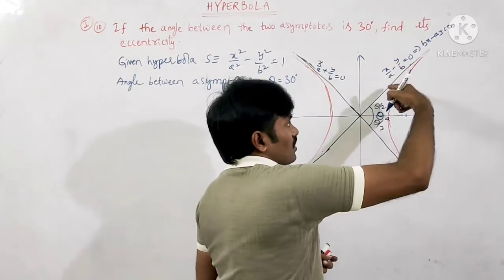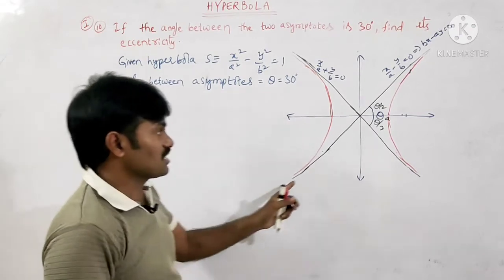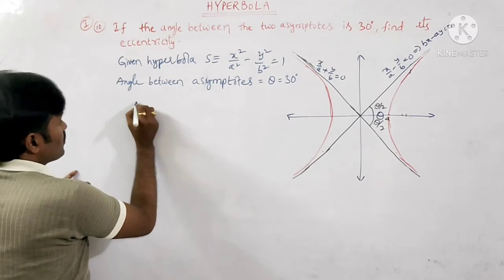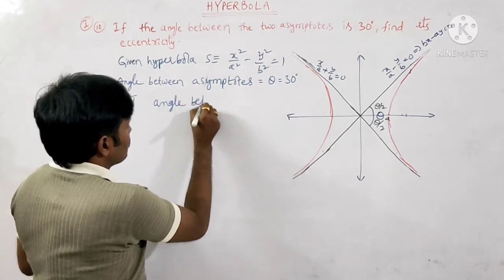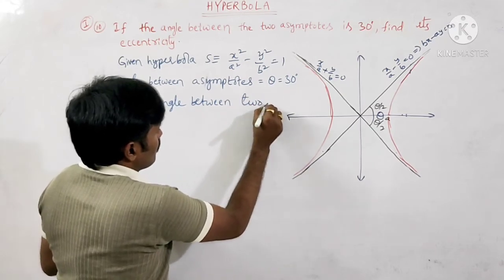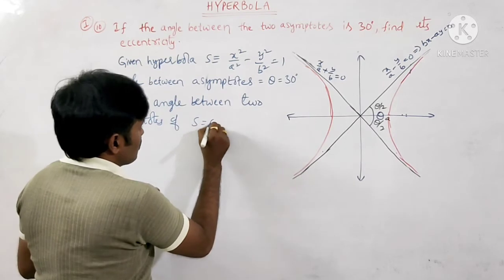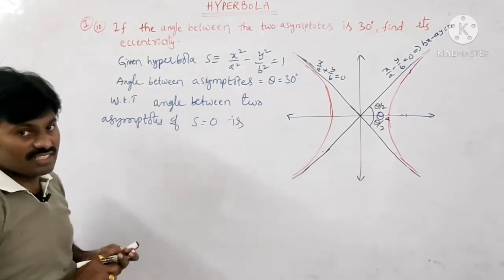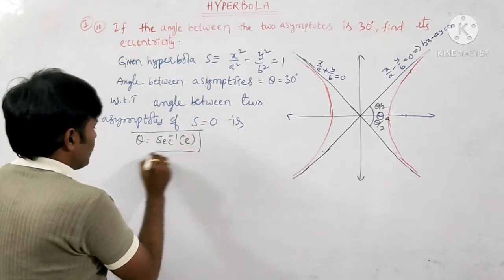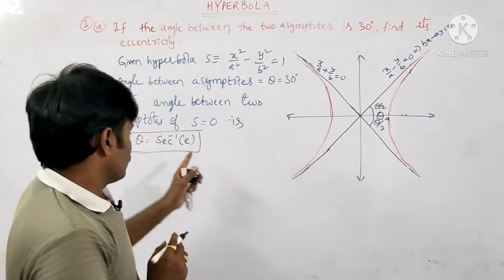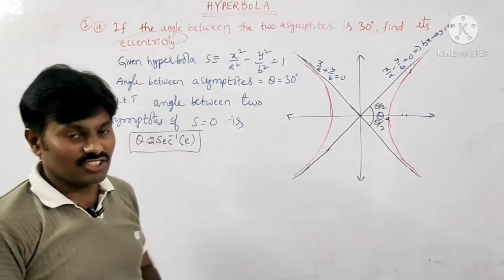Asymptotes are straight lines that never touch the hyperbola curve but limit its values. Using the formula θ = 2·sec⁻¹(e), we substitute the given angle: 30° = 2·sec⁻¹(e). Therefore sec⁻¹(e) = 15°, which gives e = sec(15°). We use this formula because we need to find e.